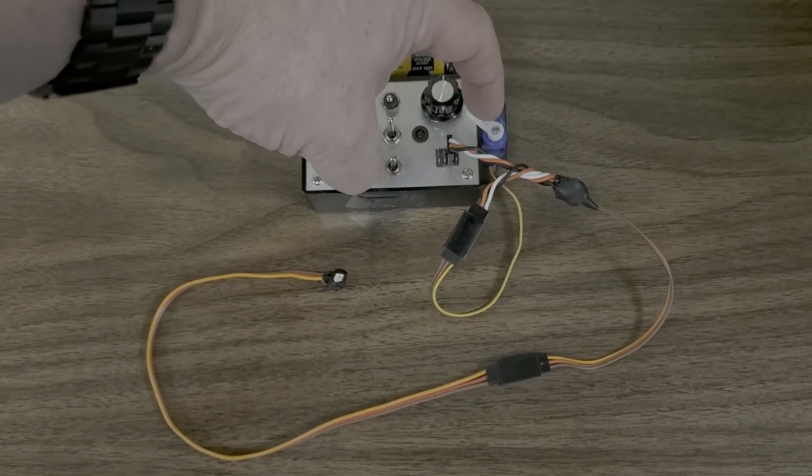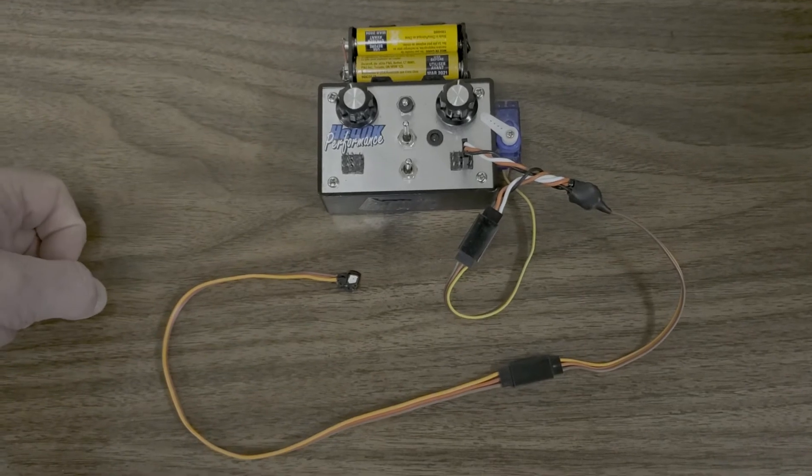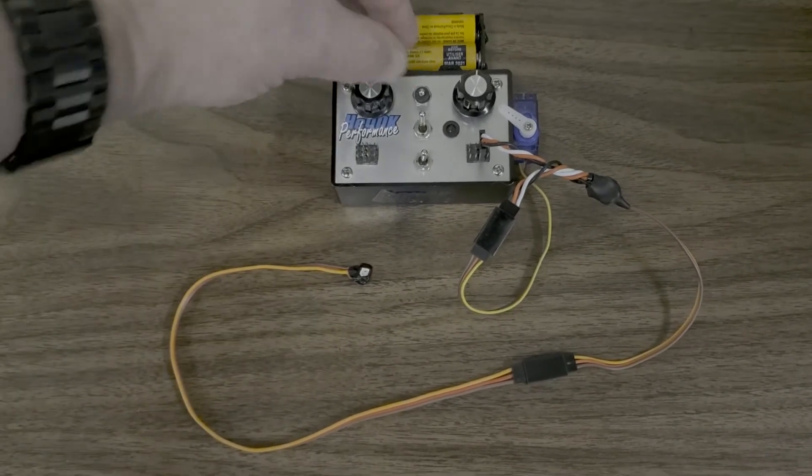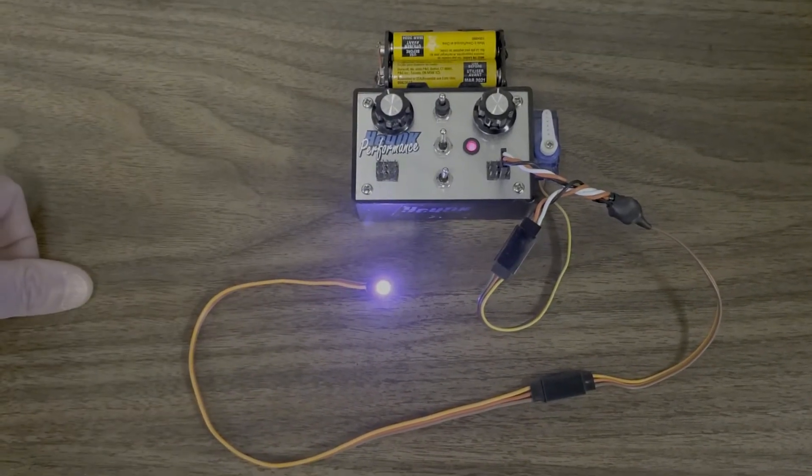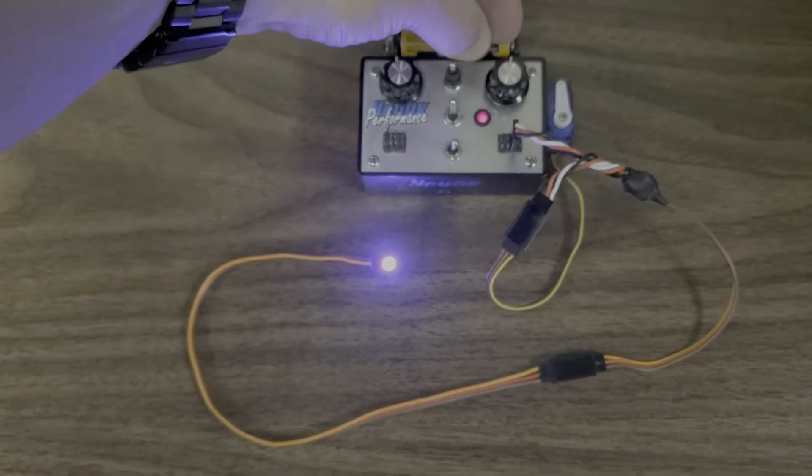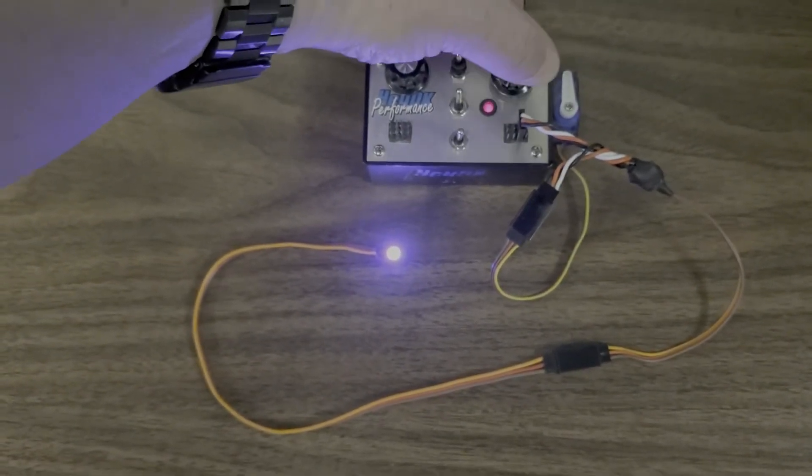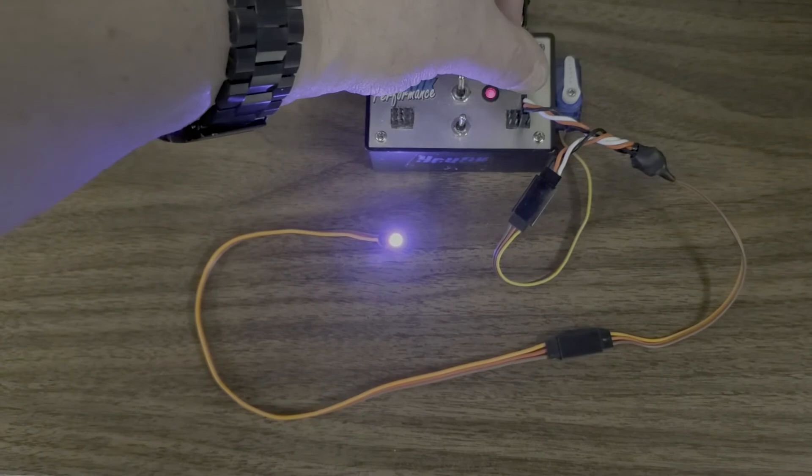So when I power it up, you should see the servo come back to the middle and the light's going to come on. Okay, now as I turn this, you're going to see the servo move and the color of the light change.